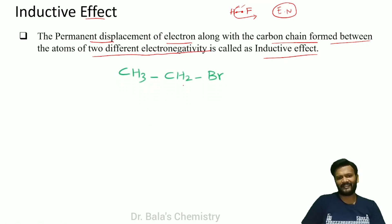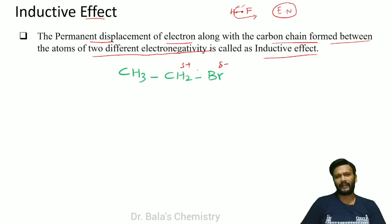Now, CH3-CH2-Br. If you look at this, Br is the higher electronegativity atom, and the carbon is the less electronegativity atom.